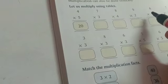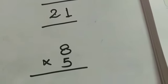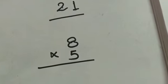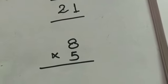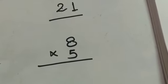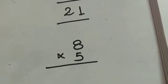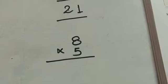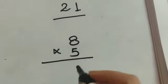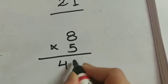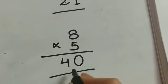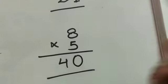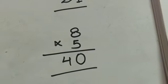Here 8 into 5, or 5 into 8. Let's multiply — read the table of 5. 5 1's are 5, 5 2's are 10, 5 3's are 15, 5 4's are 20, 5 5's are 25, 5 6's are 30, 5 7's are 35, 5 8's are 40. So 40 is the answer. 5 into 8 or 8 into 5 equals to 40.